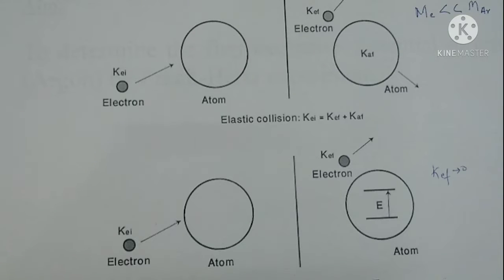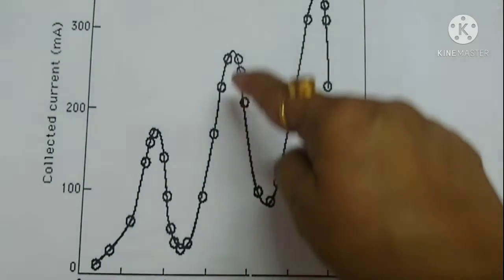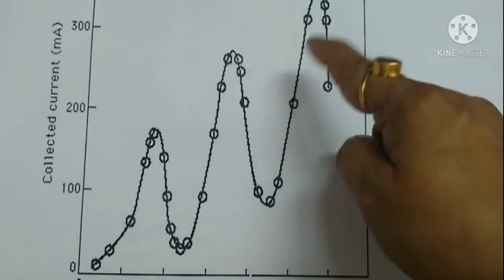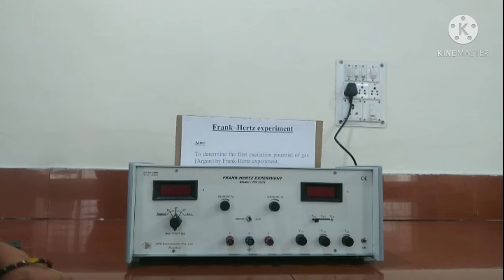Maxima and minima are obtained in the plate current. We can see peaks and dips in the plate current with increase in accelerating voltage. Now let us have a look at our experimental setup.